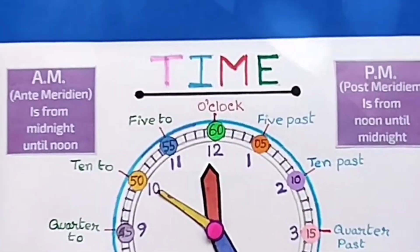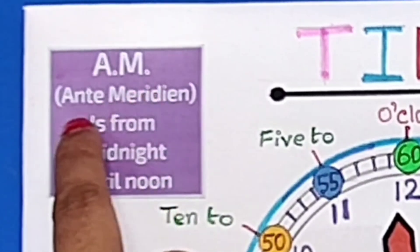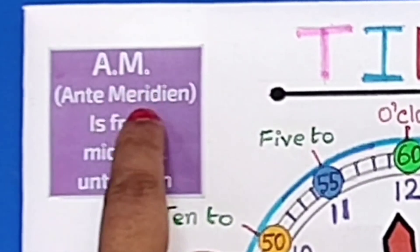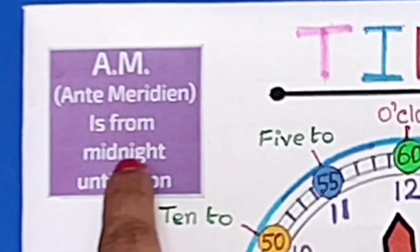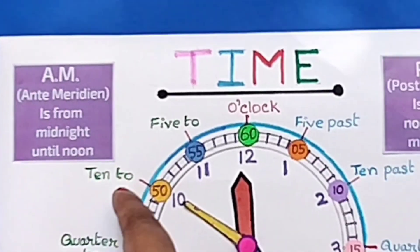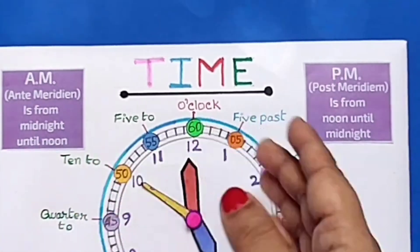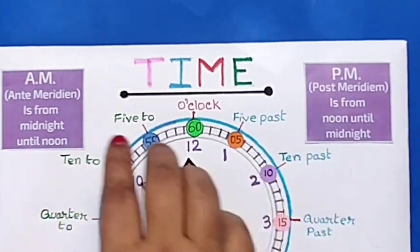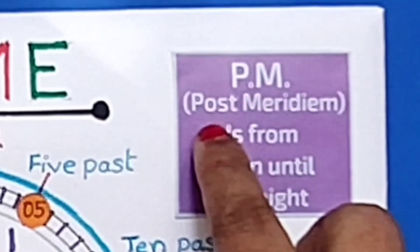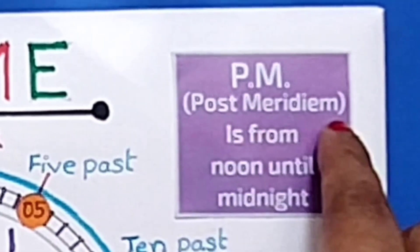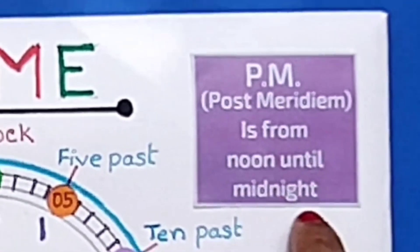AM — the full form of AM is anti-meridium. It is from midnight until noon, that means 12 o'clock at night to 12 o'clock at noon. PM — the full form is post-meridium. It is from noon until midnight.